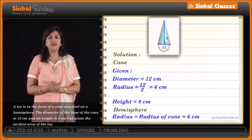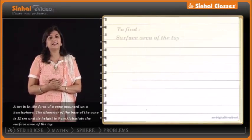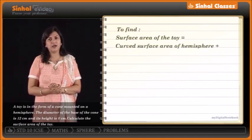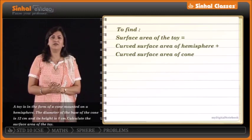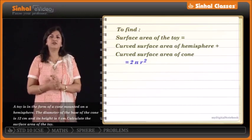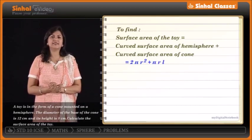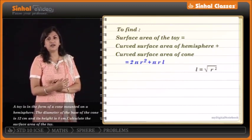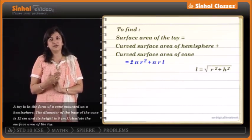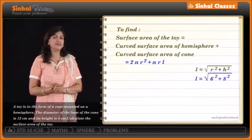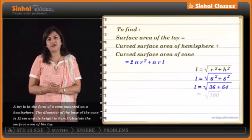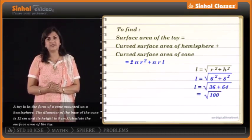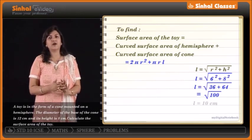We want to find the surface area of the toy: curved surface area of hemisphere + curved surface area of cone = 2πR² + πRL. We first find the slant height L = √(R² + H²) = √(36 + 64) = √100 = 10 cm (taking the positive value).